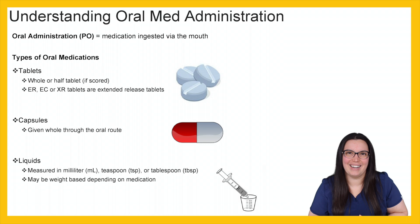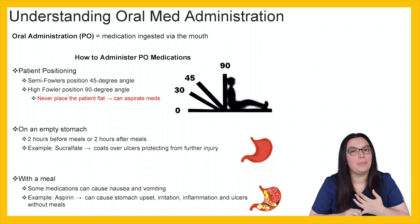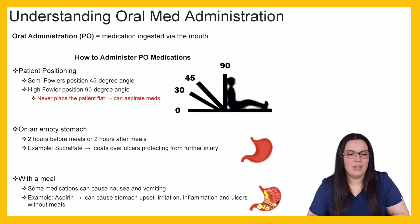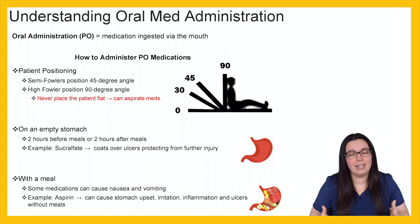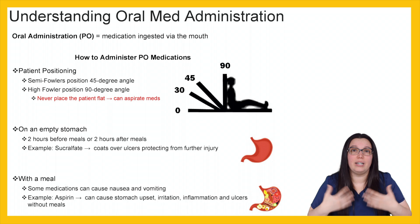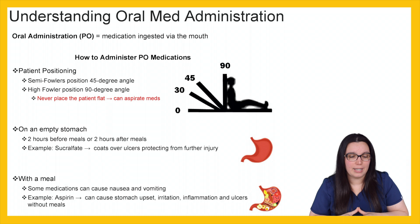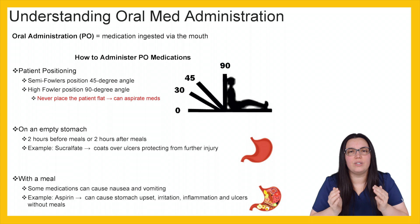When administering PO medications, we want the patient positioned correctly — either in semi-Fowler's at about a 45-degree angle or high Fowler's at a 90-degree angle. We never want to lay patients flat because they could aspirate the medication, potentially leading to pneumonia. Some medications need to be given on an empty stomach, two hours before or after meals. For example, sucralfate coats the stomach, protects against ulcers, and forms a coating over injured areas.